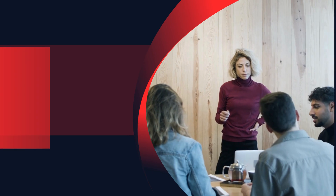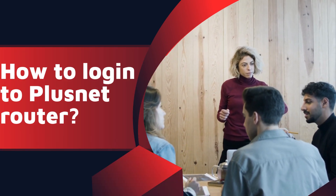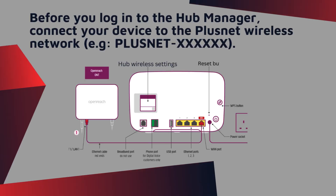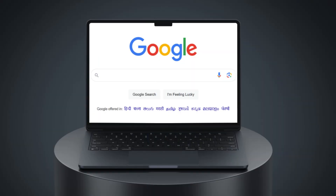How to Login to PlusNet Router. Before you log in to the Hub Manager, connect your device to the PlusNet wireless network, for example PlusNet. Open a browser and type 192.168.1.254 in the address bar.